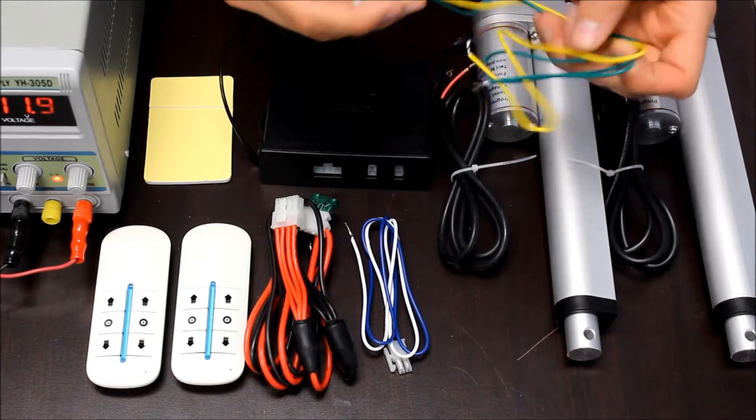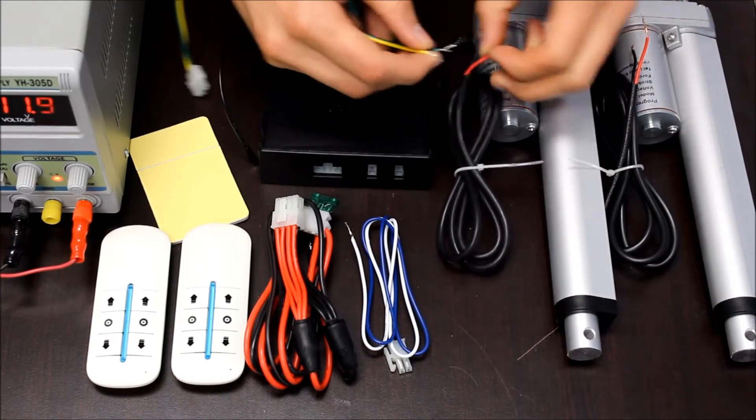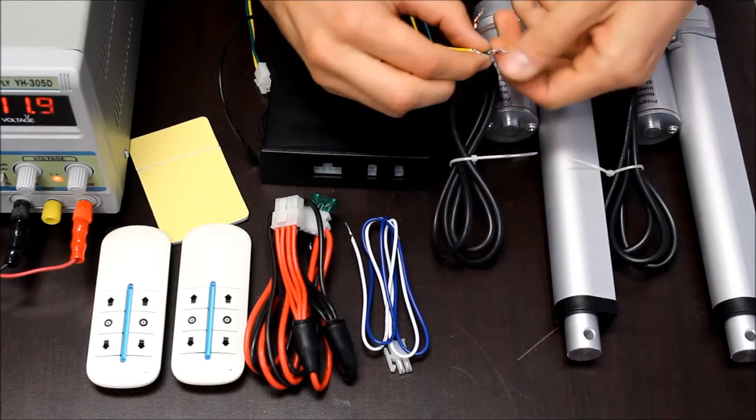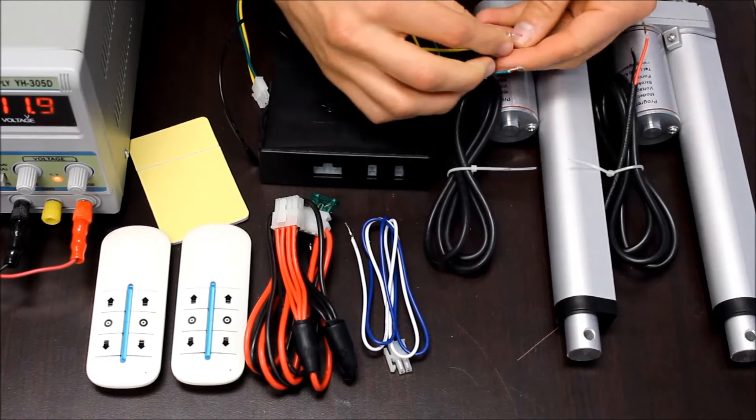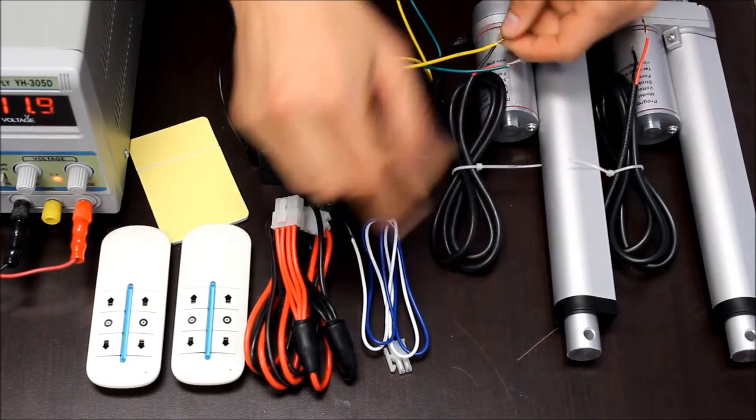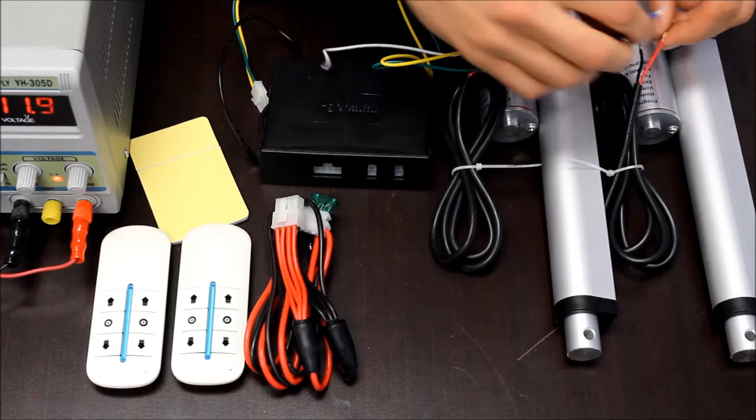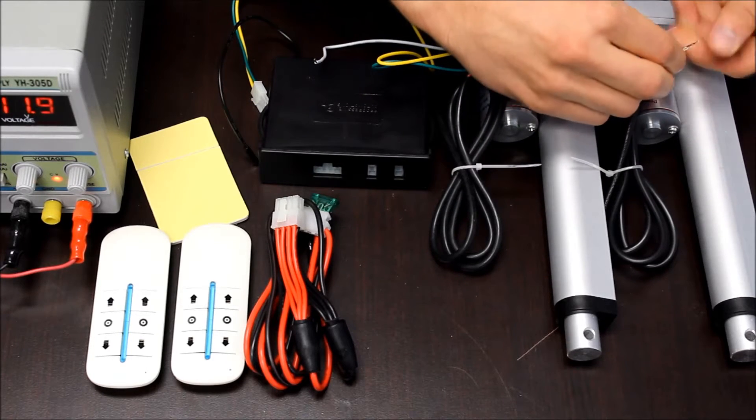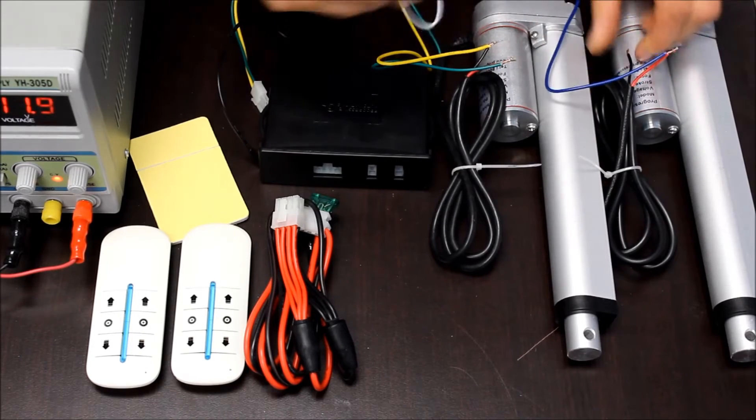To wire the PA28, take your actuator wiring harnesses and connect them to your actuators. On one of them, the green wire connects to the red wire and the yellow wire connects to the black wire on your actuator. On the other one, the blue wire connects to red and the white wire connects to black.